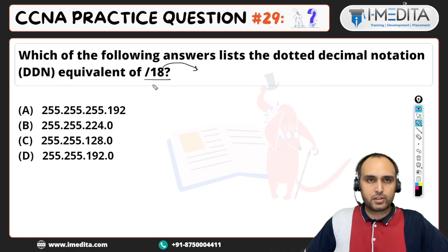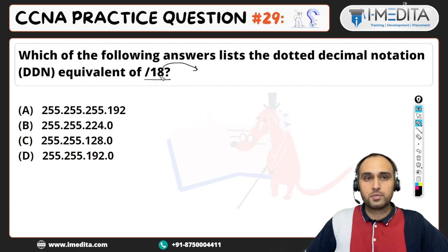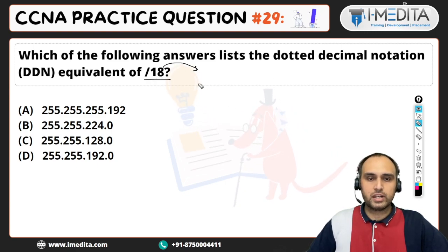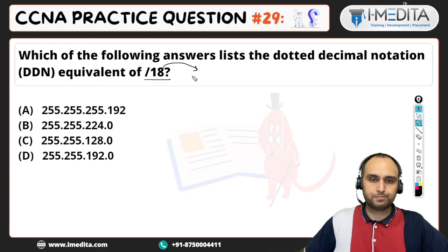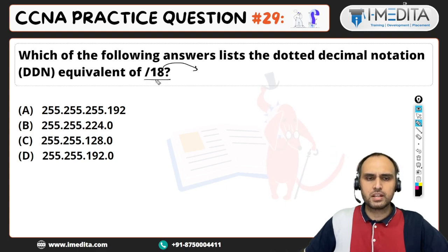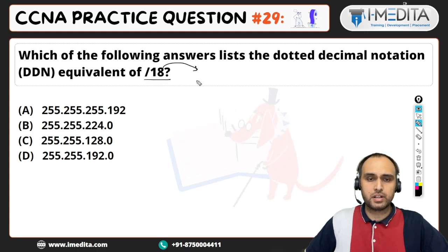For this, you need to do a binary to decimal conversion. So if we write slash 18, it's basically the number of 1s.